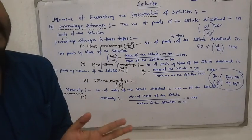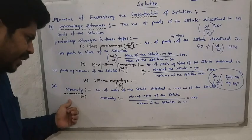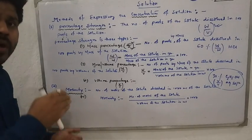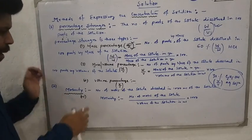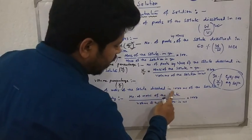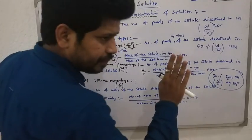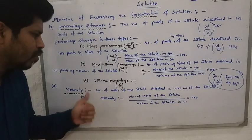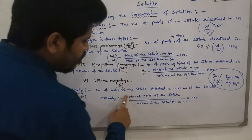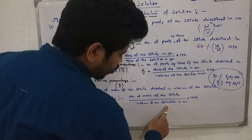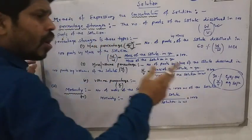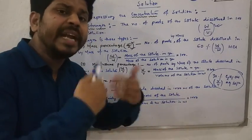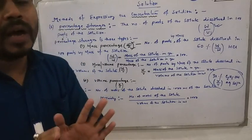Molarity we have already learned in class 11. The definition of molarity is: the number of moles of the solute dissolved in 1000 mL or 1 liter of the solution. The working formula is: molarity = number of moles of the solute divided by volume of the solution in mL, multiplied by 1000. If you take the volume in liters, there is no need to multiply by 1000.